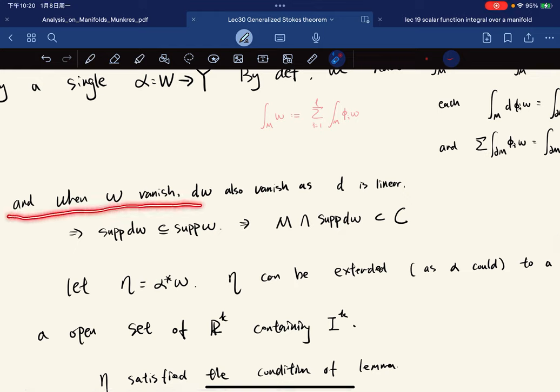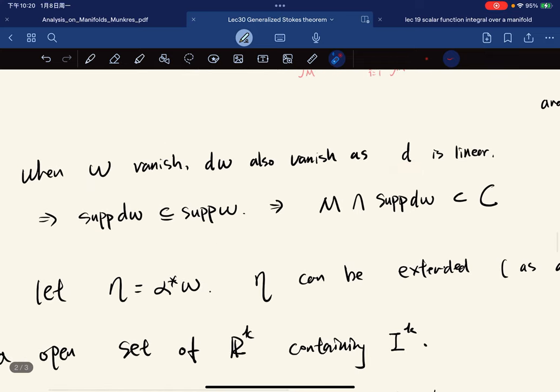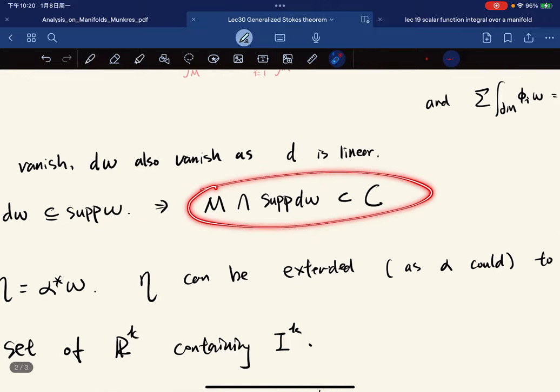And we also note that when omega vanished, the d omega also vanished, because d is linear. It maps zero element to zero element. This is a linear transformation. The support, we have this, we give this, then we know that this contains C.